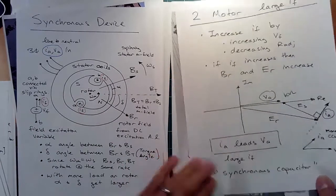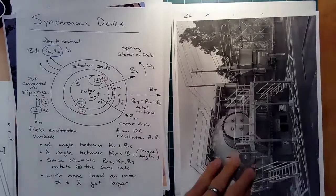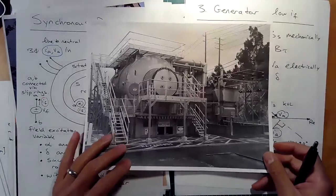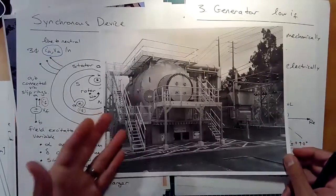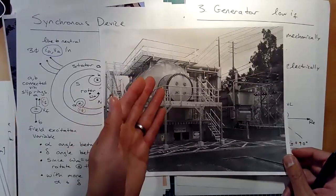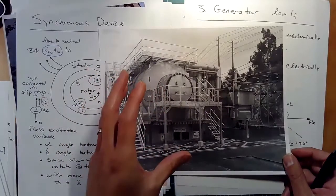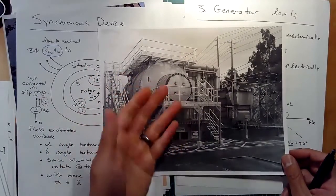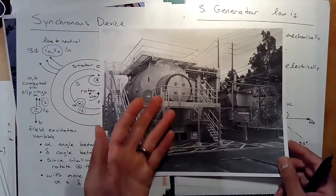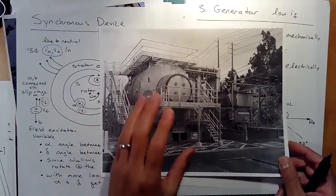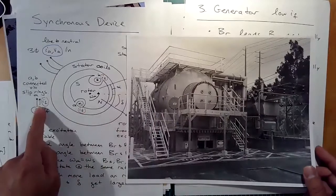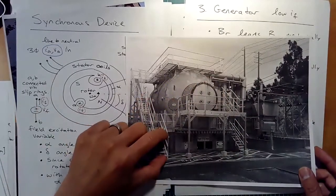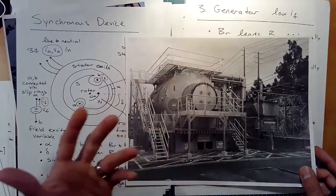Synchronous capacitors are used in real life. Here's a picture of a large synchronous condenser — it's man-sized, huge. All it is is a synchronous device where the field current is controlled, acting like a variable capacitor where you adjust the leading/lagging behavior of the power factor on the fly just by adjusting field current.